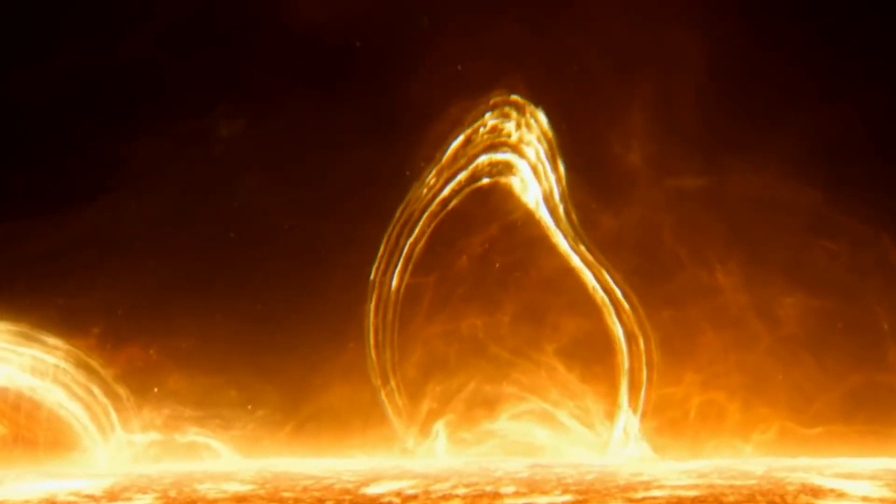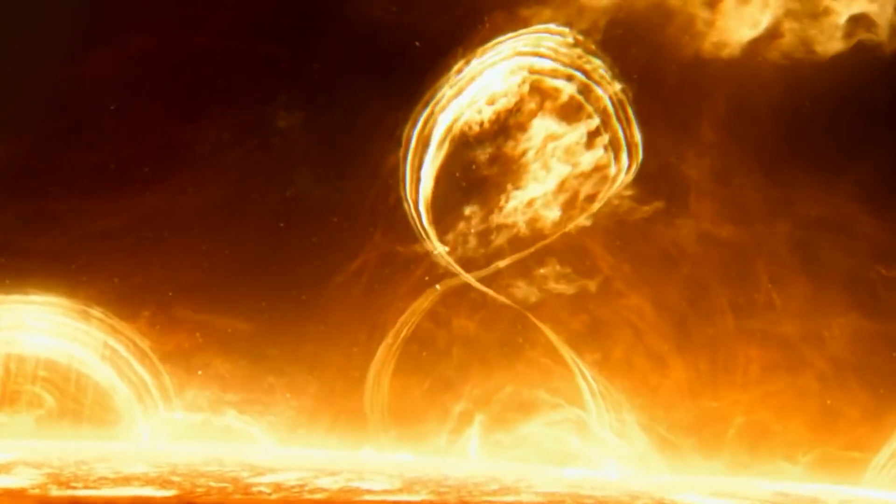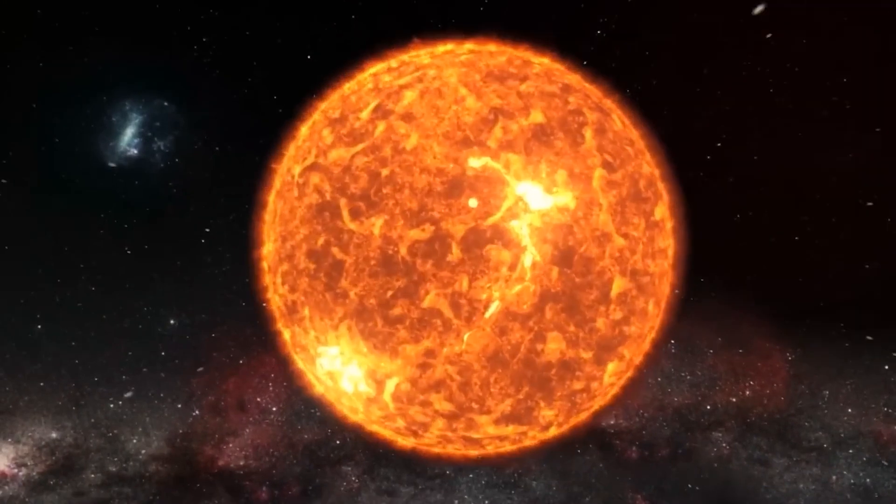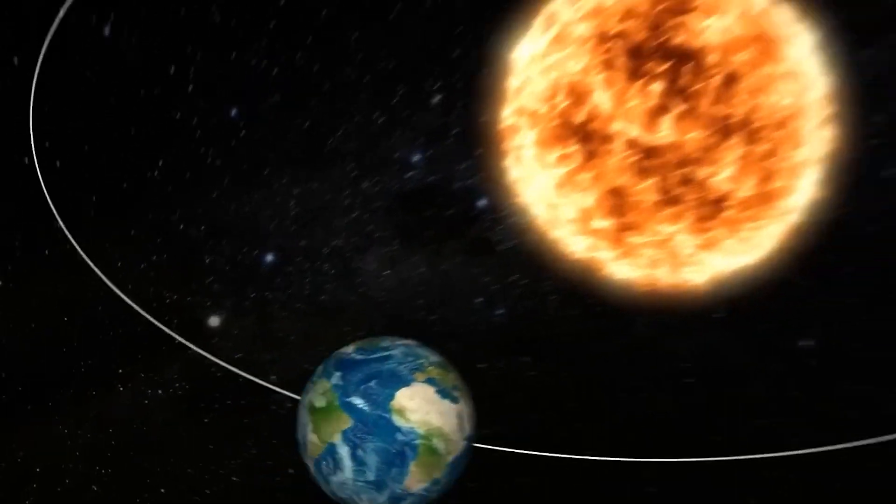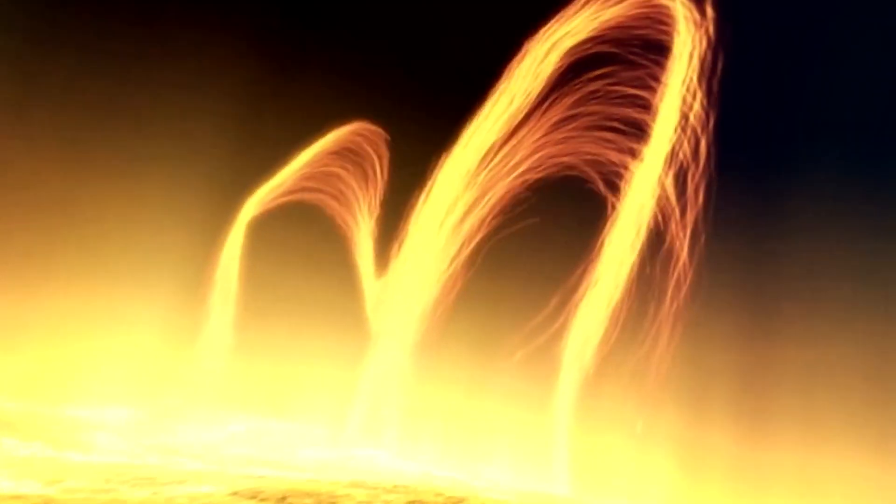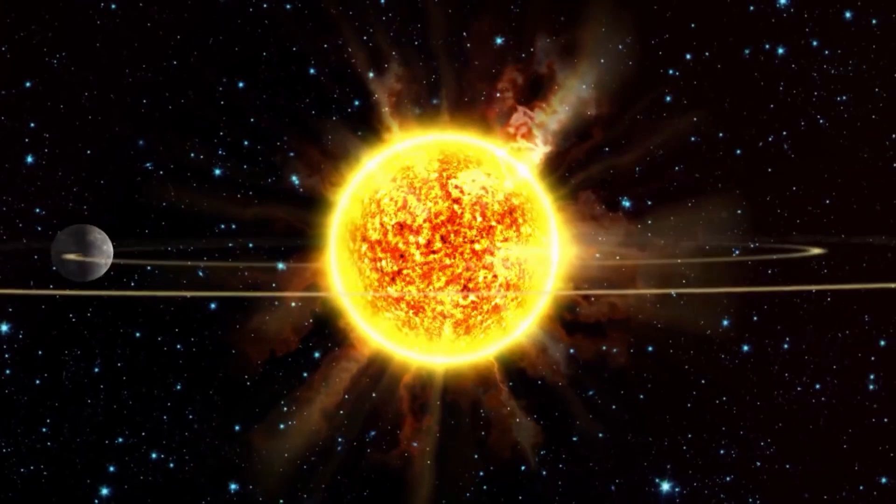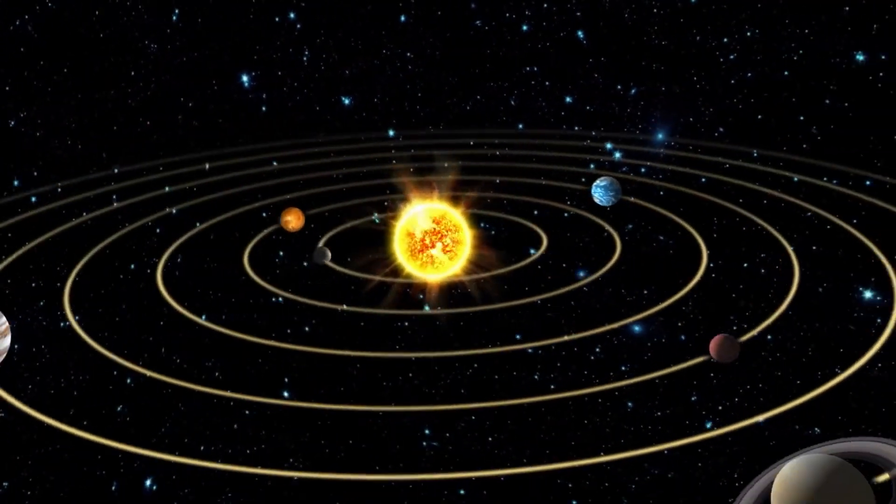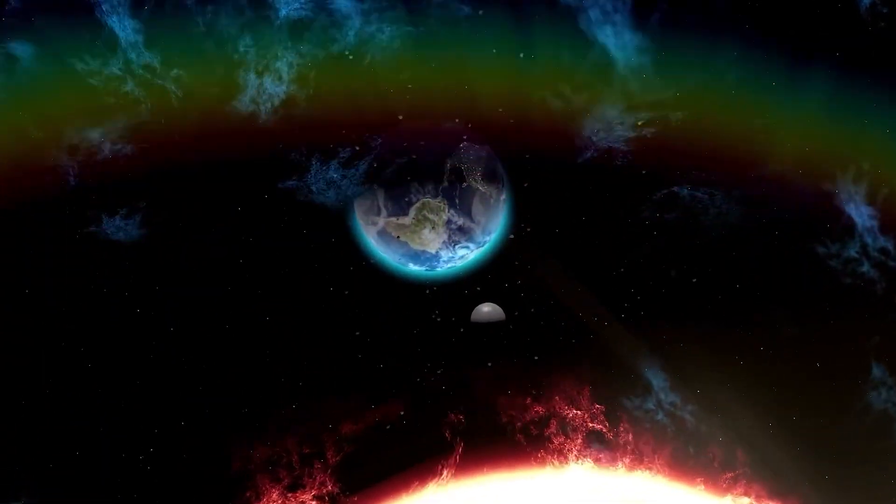Solar flares are the most powerful explosive events occurring in our solar system. They result from the build-up of magnetic energy in the sun. When this magnetic energy is released in an intense burst, it triggers a solar outburst. This event generates waves of energy that propagate outward, impacting various celestial bodies in our solar system, including Earth.